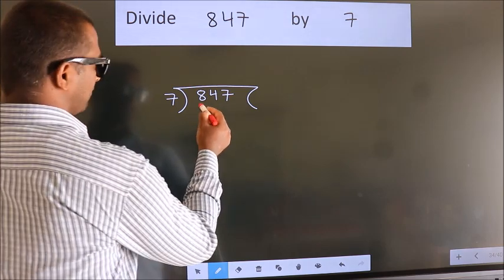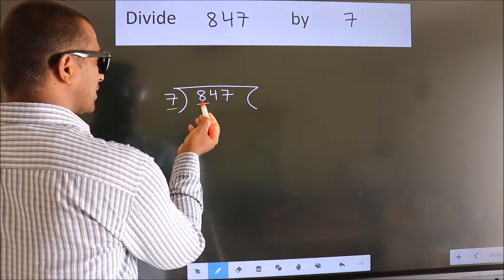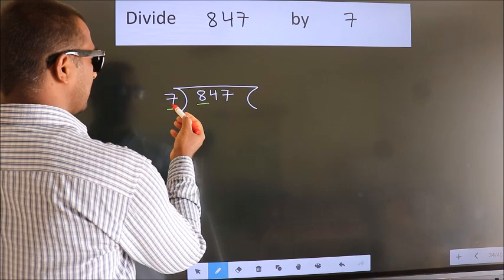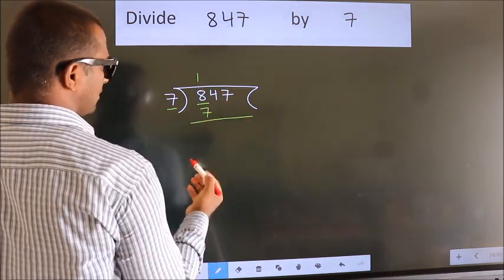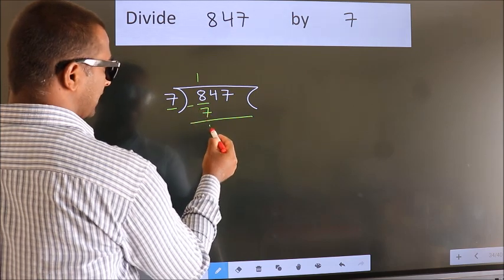Here we have 8, here 7. A number close to 8 in 7 table is 7 once 7. Now we should subtract. We get 1.